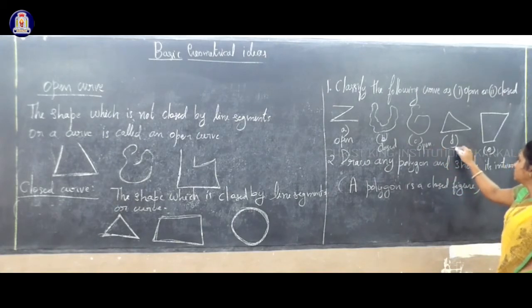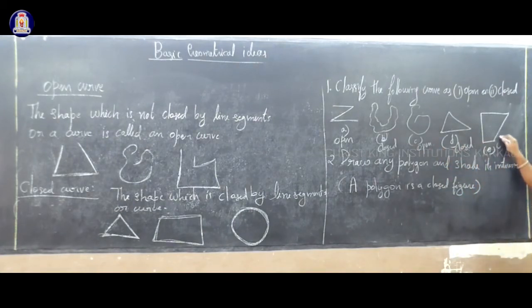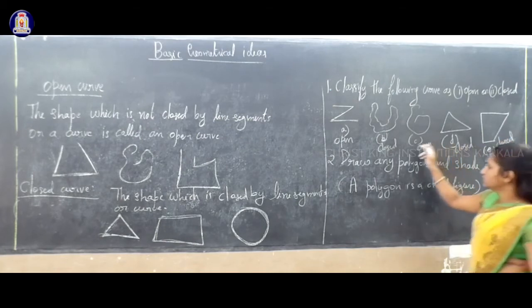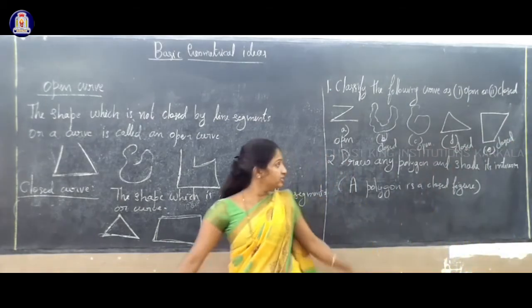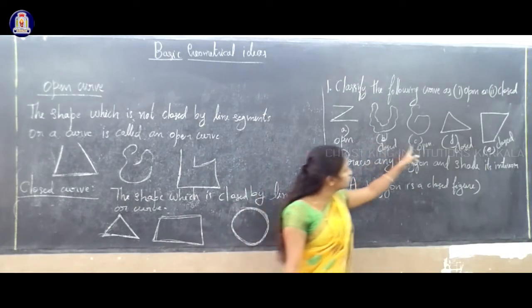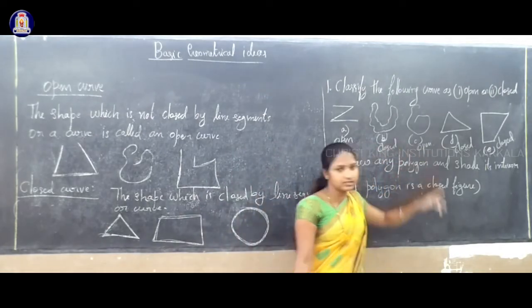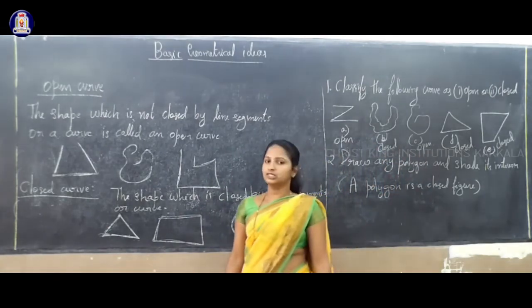This is also closed, this is also closed — one, two, three are closed figures. And these two figures are open curves.